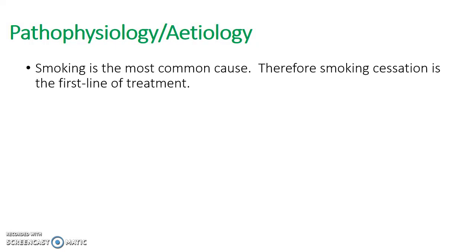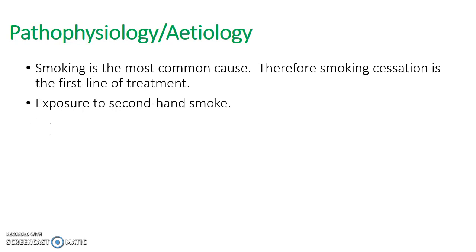Since smoking is the most common cause, smoking cessation is the first line of treatment. In medicine, lifestyle intervention is almost always first line before medication or surgery. It's important to help patients improve diet and exercise, cut out alcohol, and stop smoking with the support of cessation programmes — empowering patients to take control of their own health in a cost-effective way.